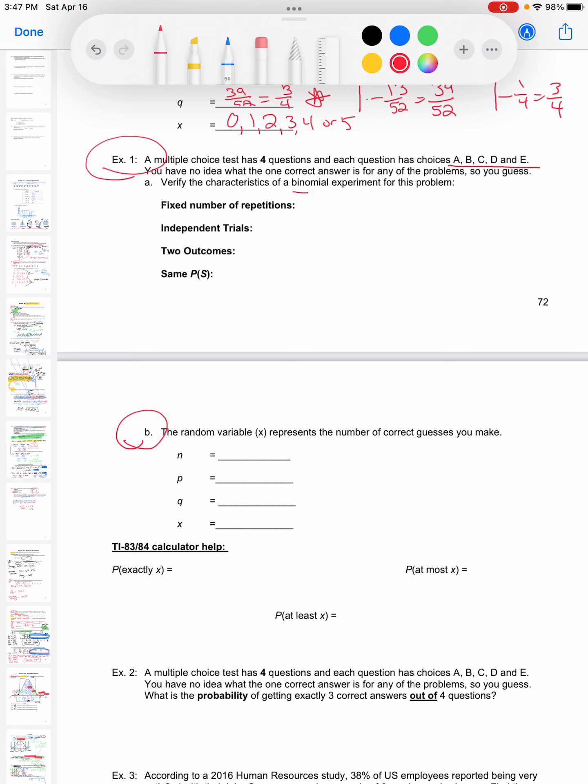First, we need to make sure that we have a binomial experiment. Are there fixed repetitions? Yes, because there are four questions. Are the trials independent? Yes, we can choose whatever answer each time that we do it. I can choose A every single time if I wanted to. Are there two outcomes? Yes, you either get it right or you get it wrong. And are the probabilities of getting it right the same each time? Yep, there's always one answer and five choices. So this is a binomial experiment.